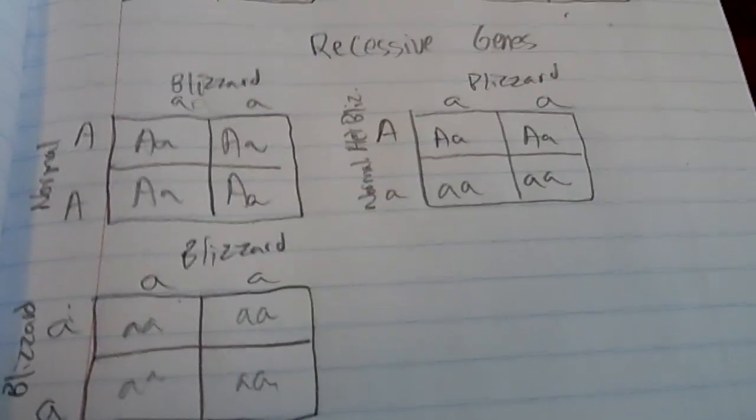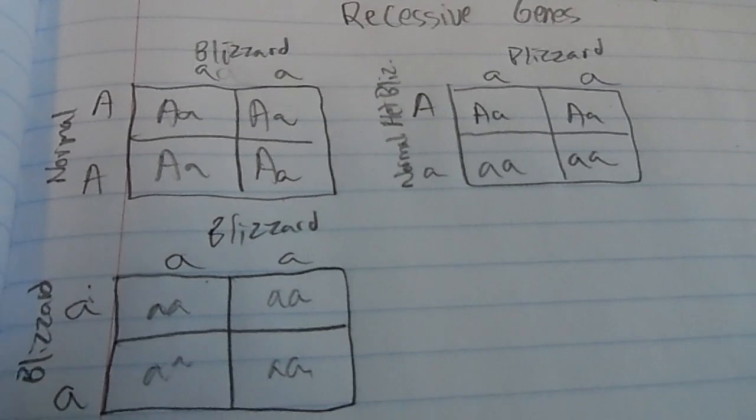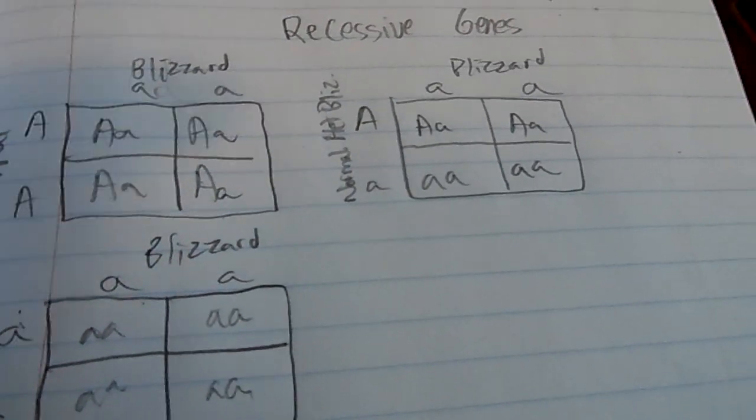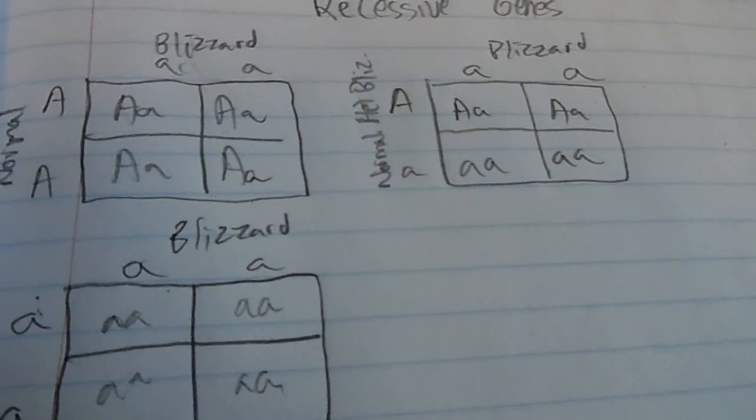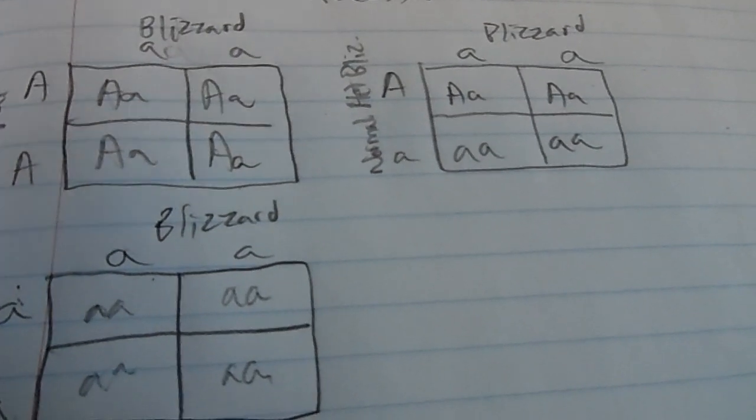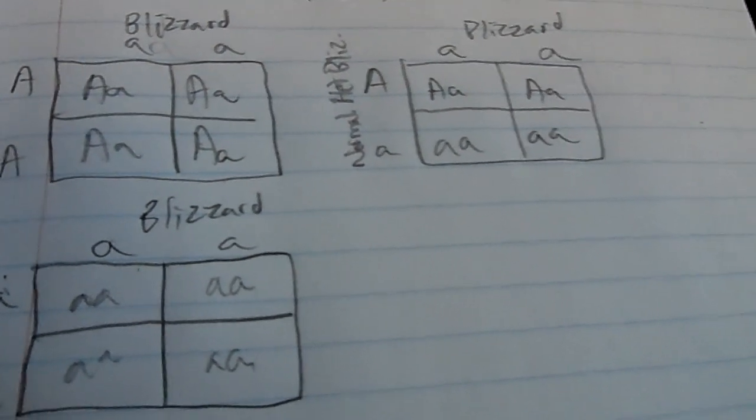So that's about it. Pretty simple recessive trait. There has to be two recessive genes to make a recessive gecko.